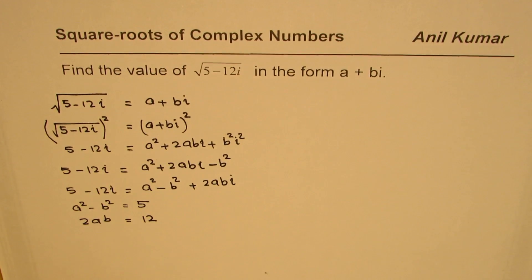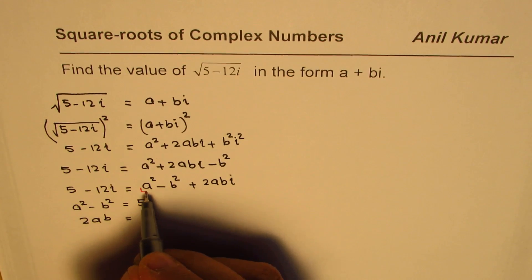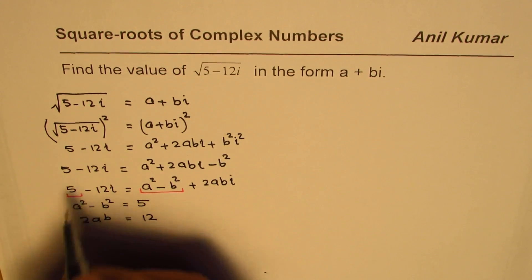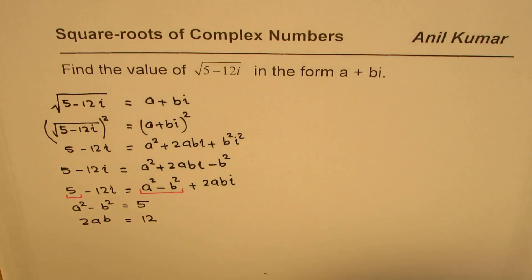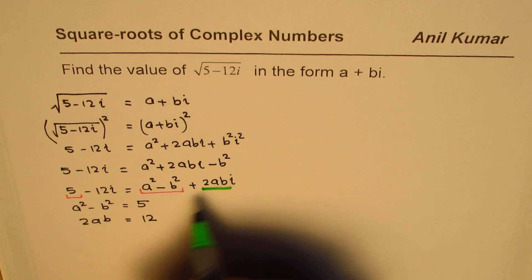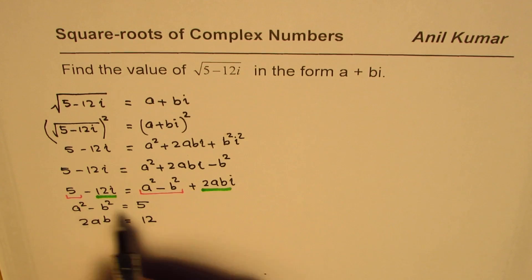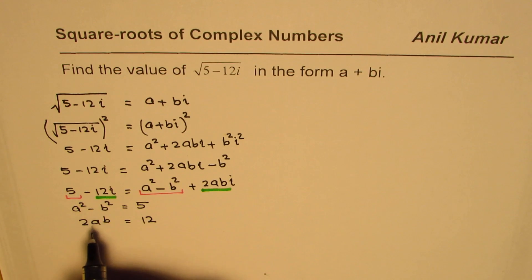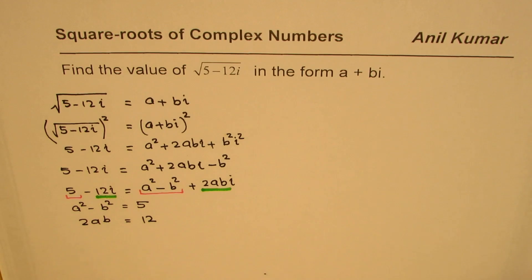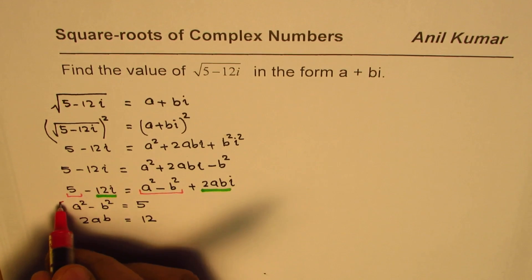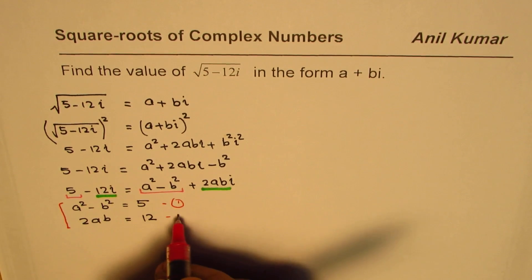What we did was equate the real parts of both equations, and equate the imaginary parts. That gave us two equations and two variables, so now we can solve for the values of a and b simultaneously. Let us label these as equation 1 and equation 2.